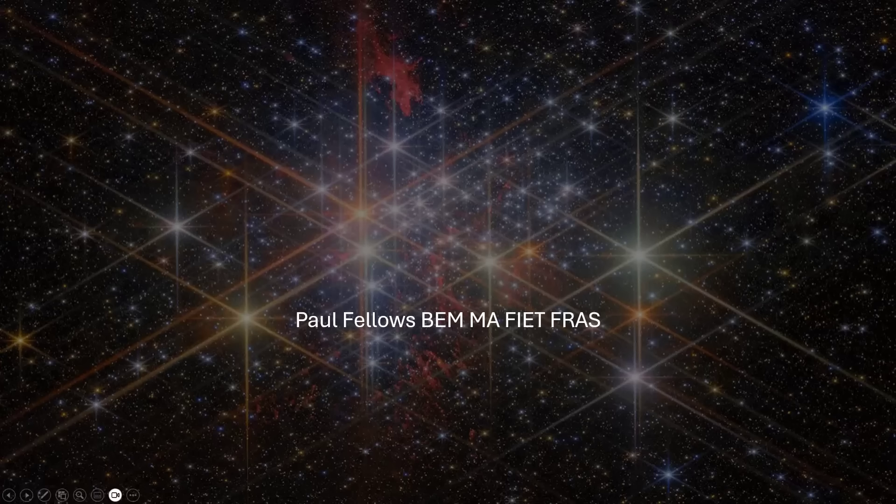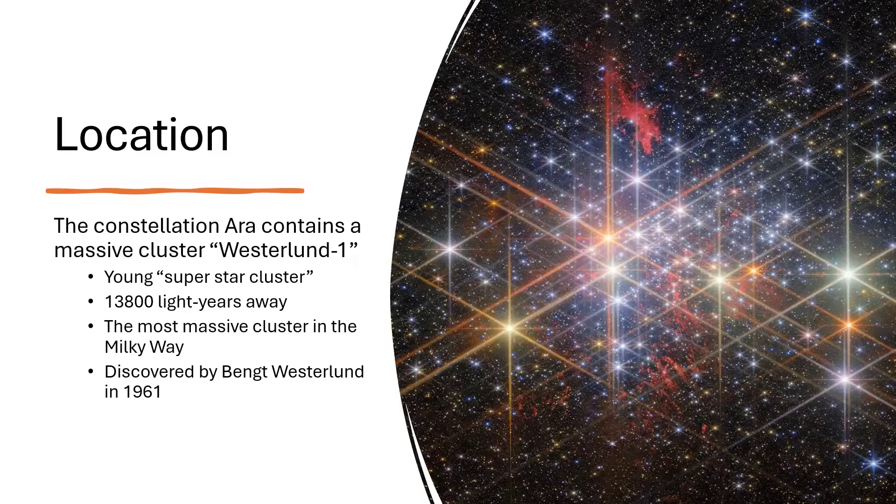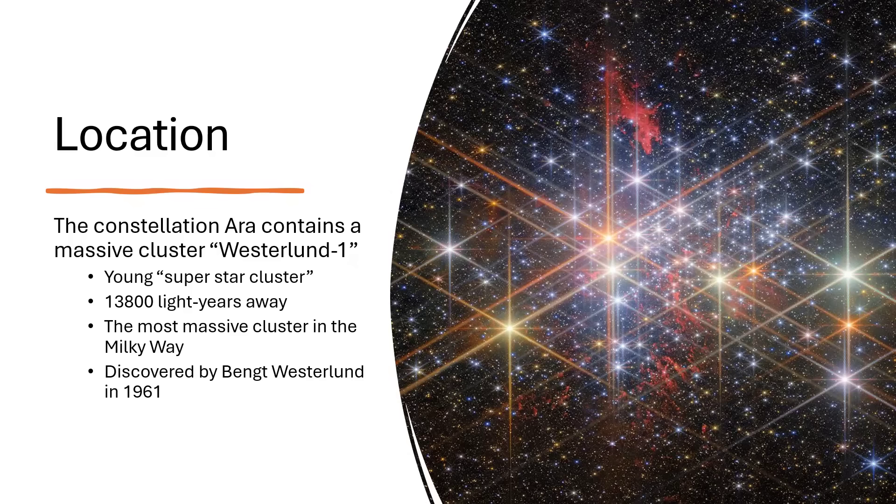Once around Westerland 1. Westerland 1 is a massive star cluster in the constellation of Ara, described as a young superstar cluster, 13,800 light years away towards Ara in the southern hemisphere, in towards the regions of the galaxy closer to the centre, about halfway between us and the centre. It's the most massive cluster in the Milky Way, first located by Bengt Westerland in 1961.